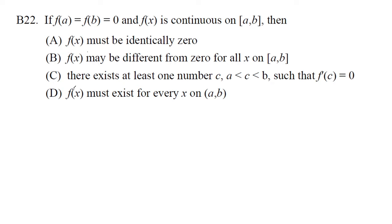Part A says f of x must be identically zero. That means if I were to draw this function from a to b, f of x has to be zero throughout this interval. This is not correct because we can have a situation where it could go up and then down and it would not be identically zero.